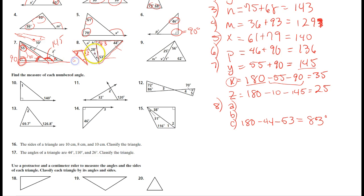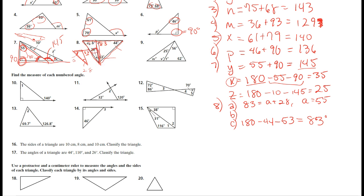So eighty-three equals the sum of the two remote interiors: eighty-three equals A plus twenty-eight. Subtracting twenty-eight from both sides gives A equals fifty-five. Then, using the triangle angle sum: twenty-eight plus fifty-five plus B equals one hundred and eighty. Subtracting fifty-five and twenty-eight from one hundred and eighty gives B equals ninety-seven.